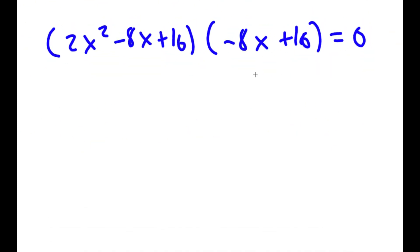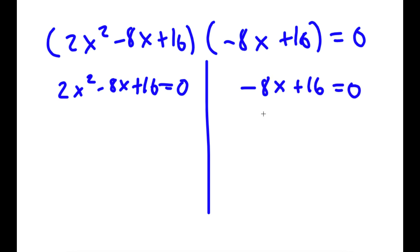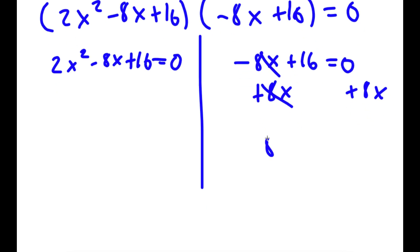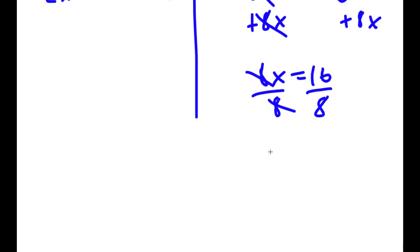So now we have two equations. For negative 8x plus 16 equals 0, I'm going to add 8x on both sides — these two cancel out — so I get 8x equals 16. And now if I divide both sides by 8, I get x is equal to 2.